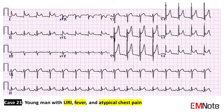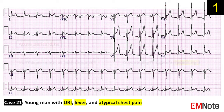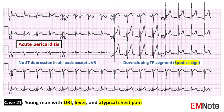Case 21: The patient is a young man presenting with upper respiratory tract infection, fever, and atypical chest pain. The ECG shows diffuse PR depressions and ST elevations in multiple leads except lead AVR, which is compatible with acute pericarditis. Spodick's sign refers to downsloping TP segments found in acute pericarditis, as shown in this ECG.